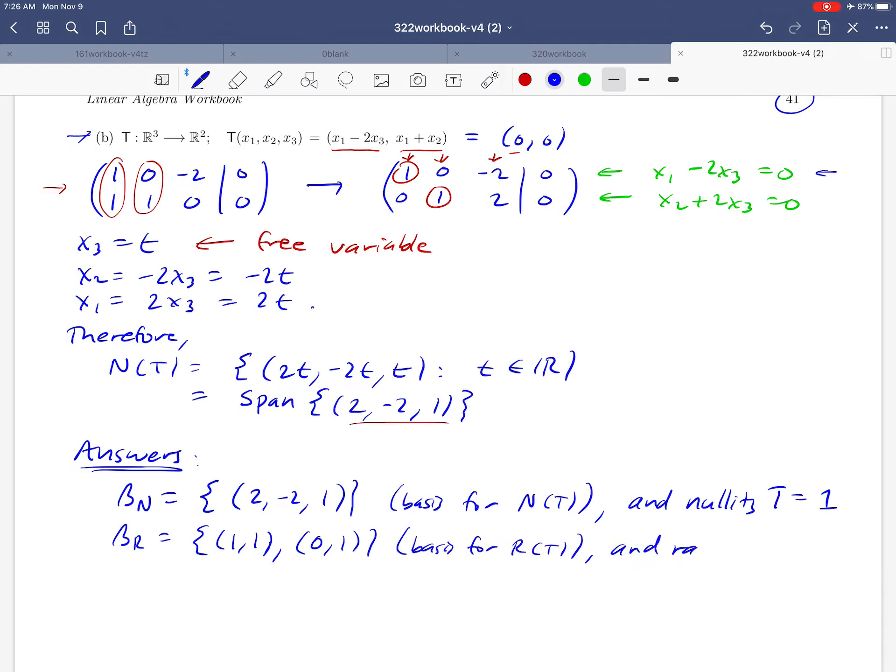That's our basis for R of T. And the rank, that's just the dimension of the range. We know that that's 2 because of the fact that there are two vectors in that basis. And there's our answer.